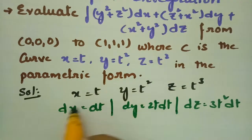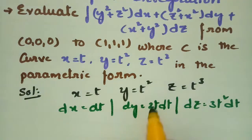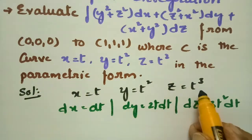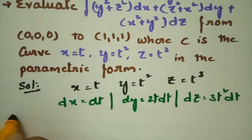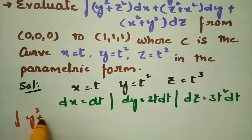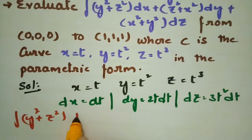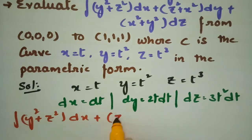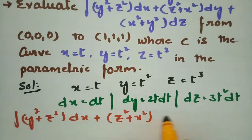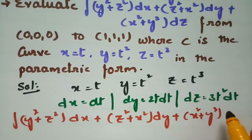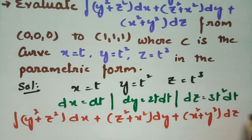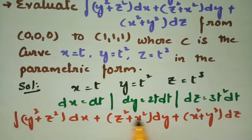Here we have the x value, dx value, y value, dy value, z value, and dz value. Now I am going to integrate this. The integral is (y² + z²)dx + (z² + x²)dy + (x² + y²)dz, and I have to substitute all these values.